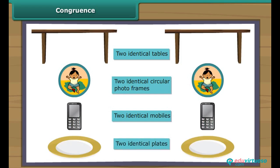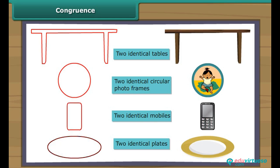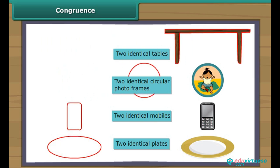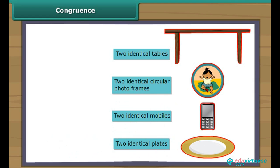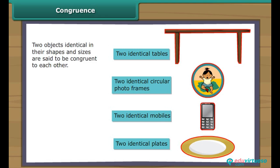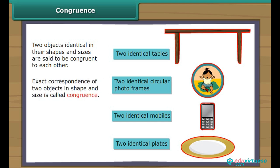We will now perform an activity with these objects. First, we draw their outlines and then remove the objects. Next, we slide the outlines of each pair of identical objects one over the other. What do we observe? The outline at the bottom is invisible — it merges with the outline on the top exactly. Two objects identical in their shapes and sizes are said to be congruent to each other.